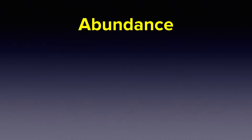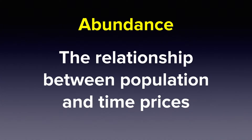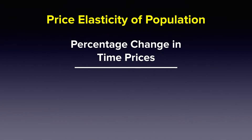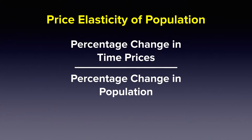We define abundance as the relationship between population and time prices. We have an equation that quantifies this relationship, which we call the price elasticity of population, or PEP. That equation is the percentage change in prices divided by the percentage change in population.